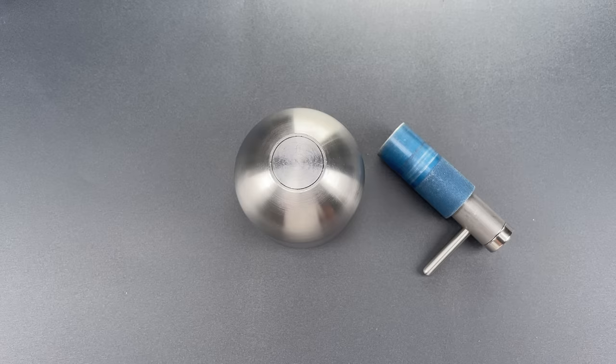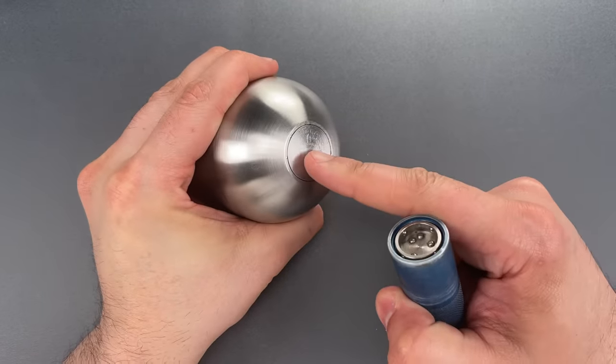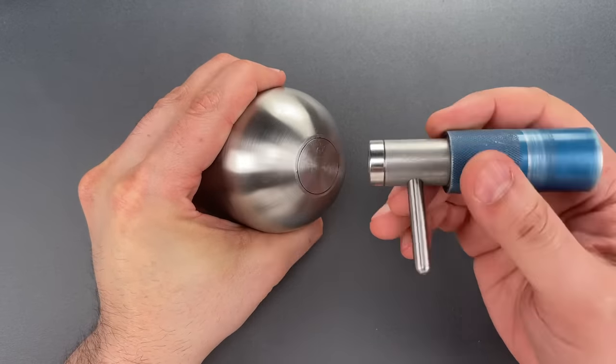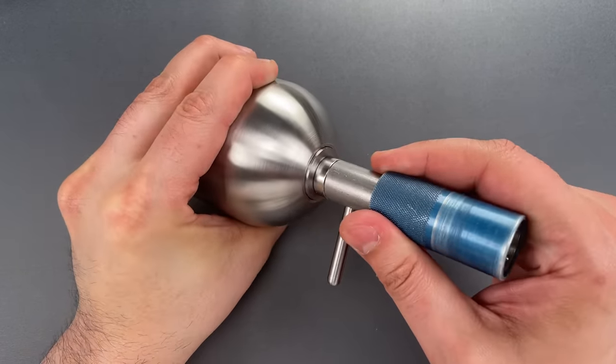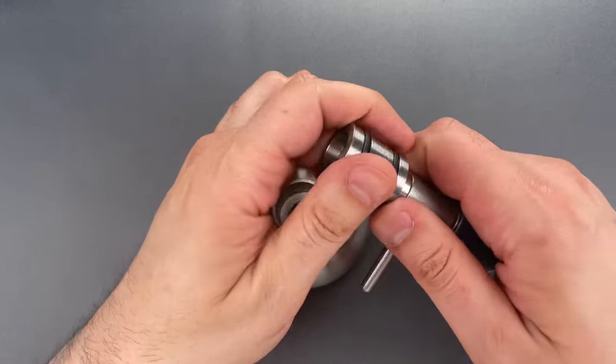As for the pickproof claim, it's not something easy to discuss without showing you how it works. The first step of opening this is to remove this plunger, and that's done with a magnet on the back of the key. It's just friction held in place with these two O-rings.